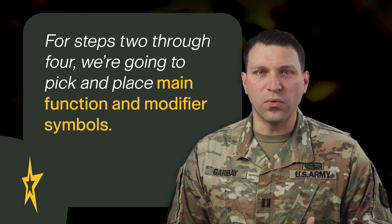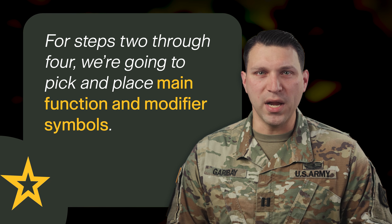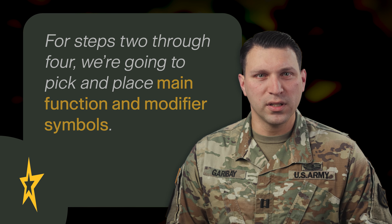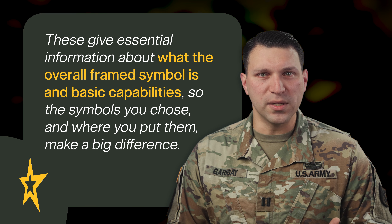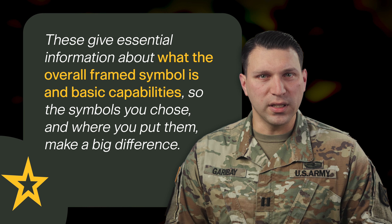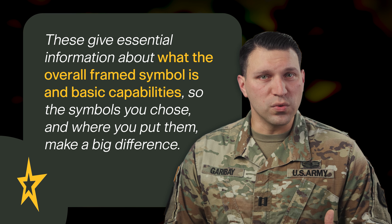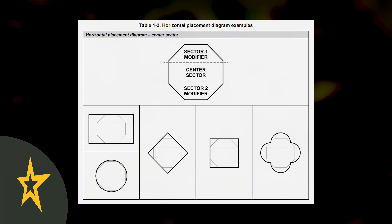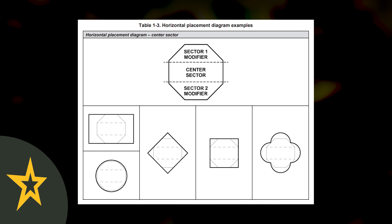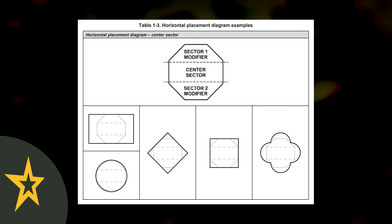For steps 2 through 4, we're going to pick and place main function and modifier symbols. These give essential information about what the overall framed symbol is and basic capabilities, so the symbols you choose and where you put them make a big difference. First, let's look at placement. Frame symbols use what's called a bounding octagon for symbol placement, which is just an eight-sided shape that's divided into three sections. Main function symbols go in the center.